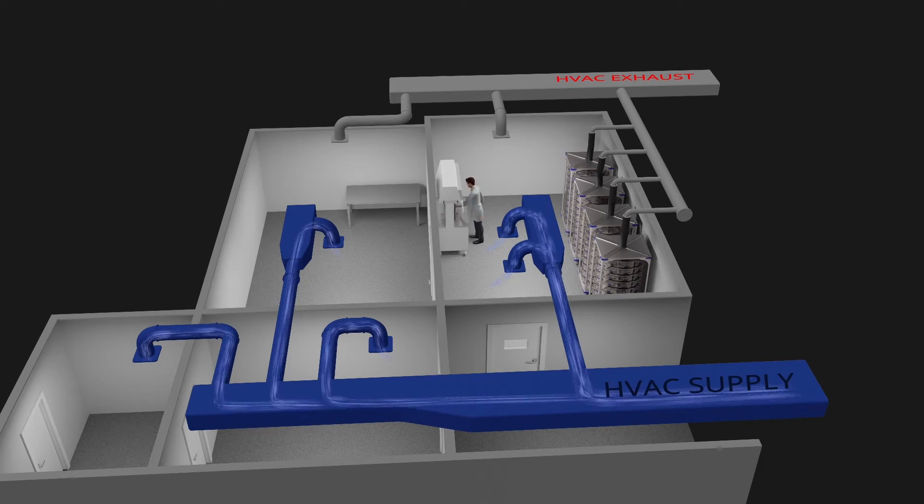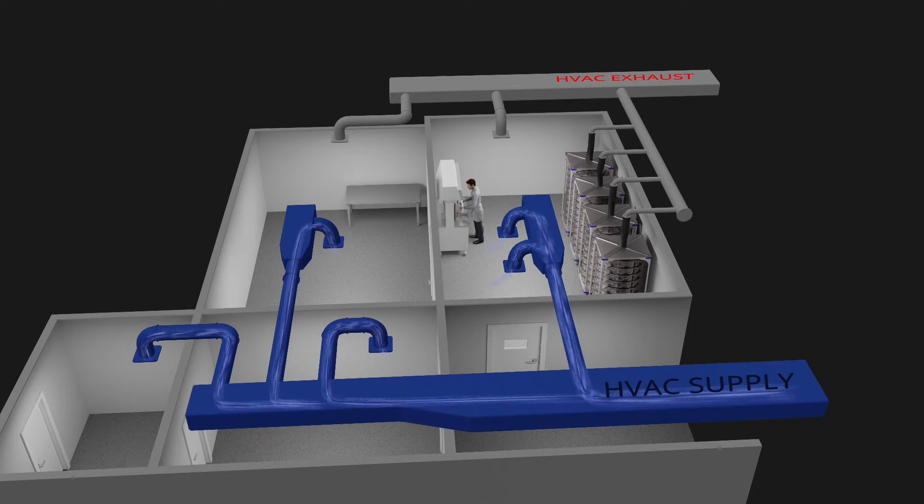The blue color in this animation represents the supply air from your building's HVAC system traveling through the building's ducts and entering the rodent room as it normally does.